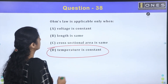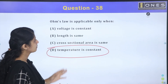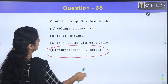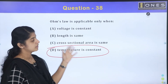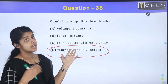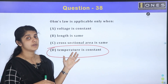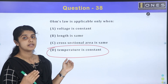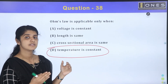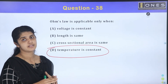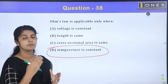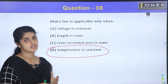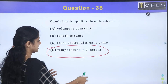We have positive temperature coefficient materials and negative temperature coefficient materials. When temperature varies, the resistance changes, which is why Ohm's Law applies strictly only at constant temperature.